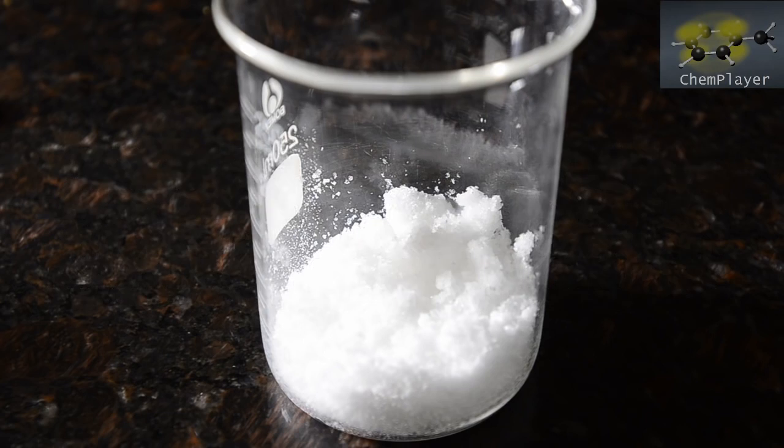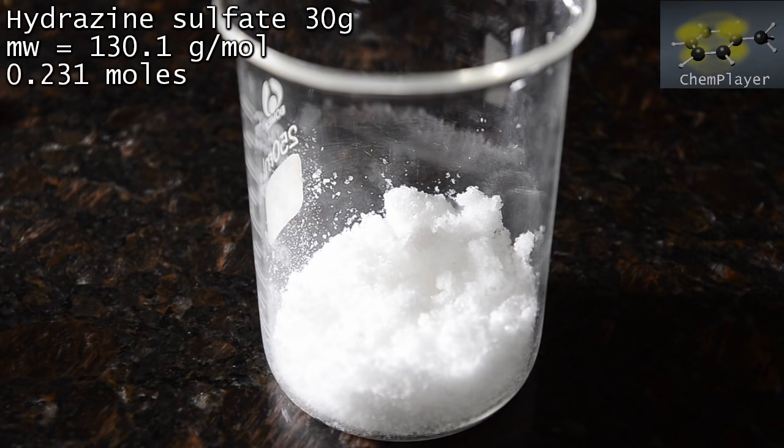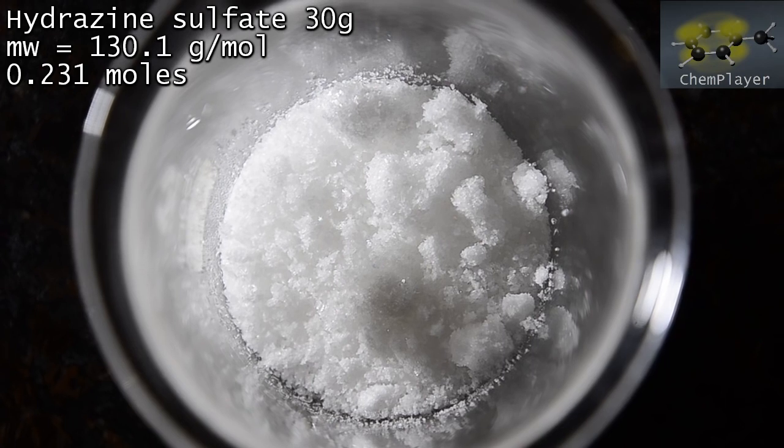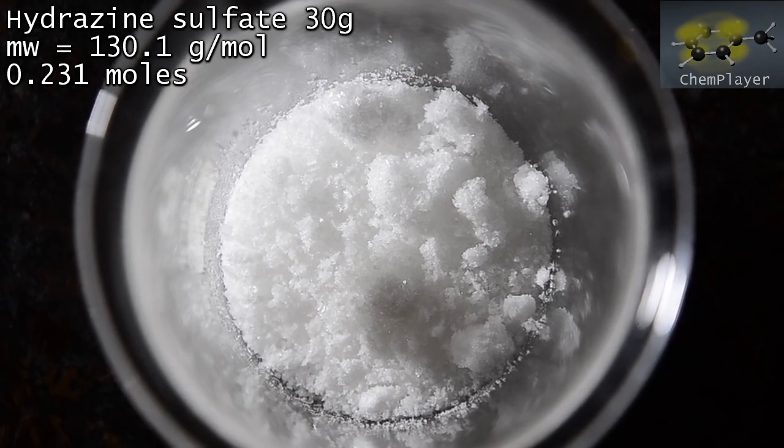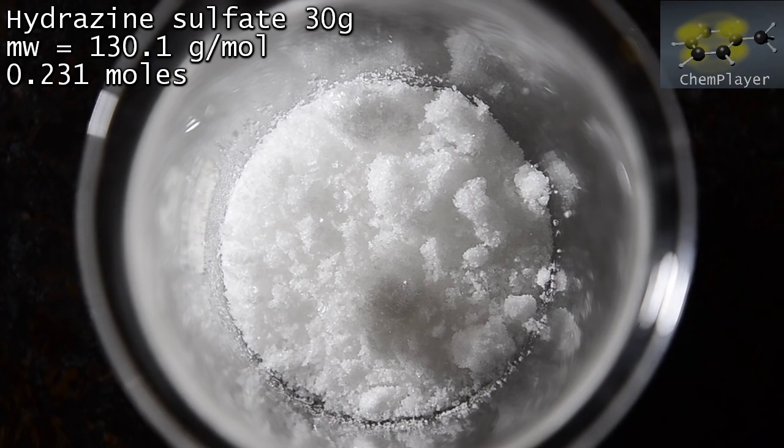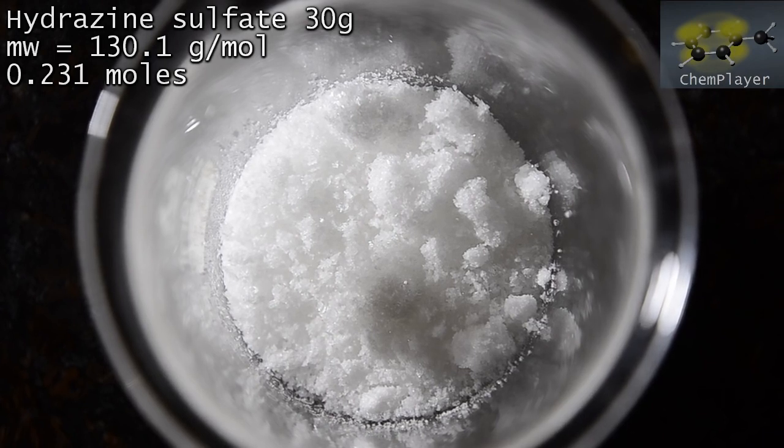Our starting material for the reaction is hydrazine sulfate. We're using 30 grams of this. We dried this over calcium chloride for a few days. Check out our previous video for details of how you can make this using urea and sodium hypochlorite bleach.